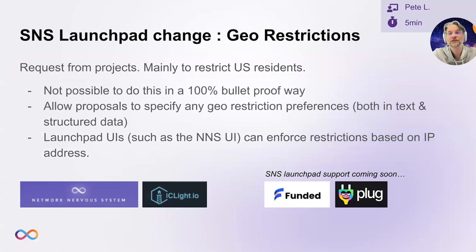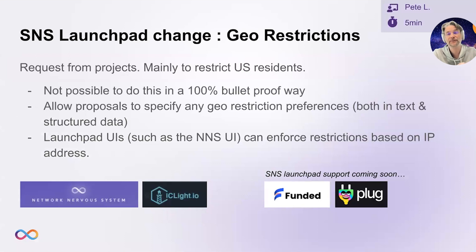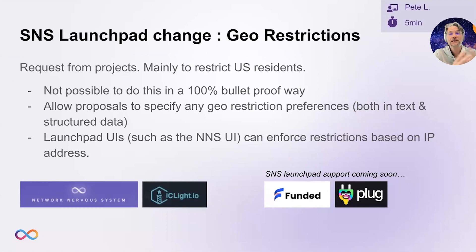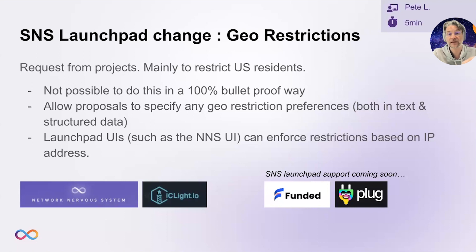The second change is geo-restrictions. Many projects have asked us to be able to exclude certain countries, principally the US, for various reasons, from participating in SNS launches. As a decentralized, permissionless blockchain, it's worth reminding everyone that it's not really possible to do this in a bulletproof way. So what we're proposing is to allow projects to encode geo-preferences and that the various launchpad UIs can choose to implement some kind of enforcement or warnings as they see fit. It's also great to see that there are wallets beyond the NNS front-end DAP implementing launchpad support — IC Lighthouse launched their UI prior to the OpenChat launch, and Funded and Plug are planning to support the launchpad soon.